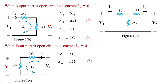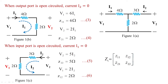Also, v1 becomes the measurement of voltage across the 2 ohms element, so v1 = 2·i2, and the reverse transfer impedance z12 = v1/i2 equals 2 ohms. Combining equations 3 through 6, the Z parameter matrix is [6, 2; 2, 5]. Note that z12 = z21, which confirms the reciprocal nature of this circuit.